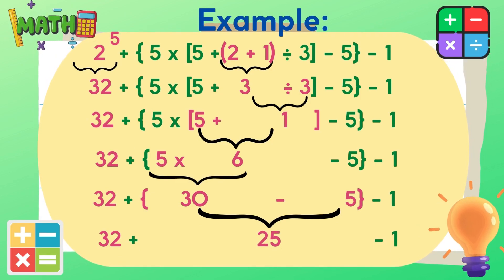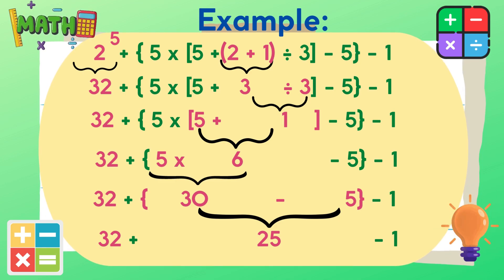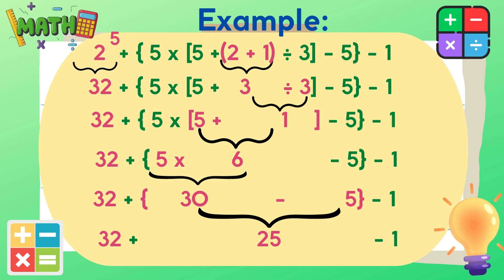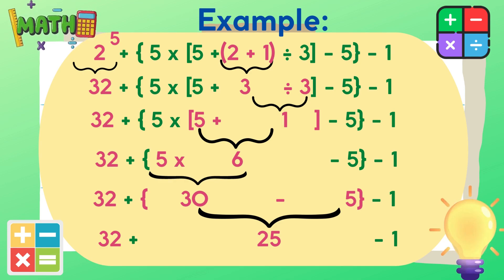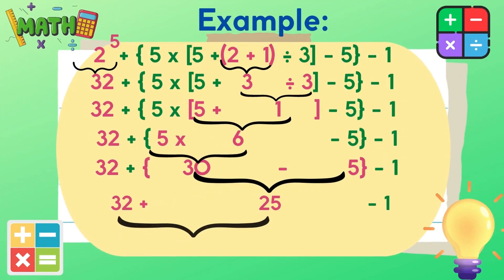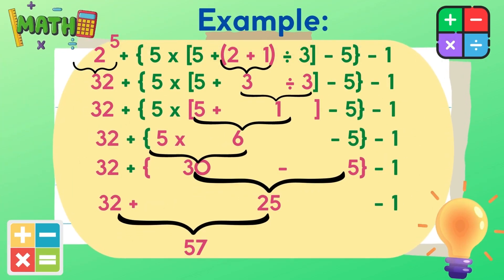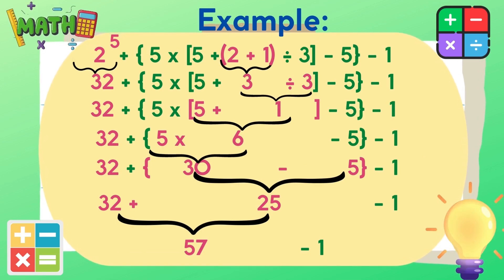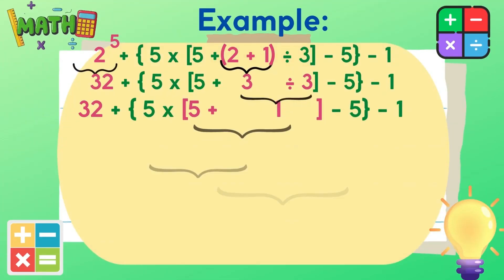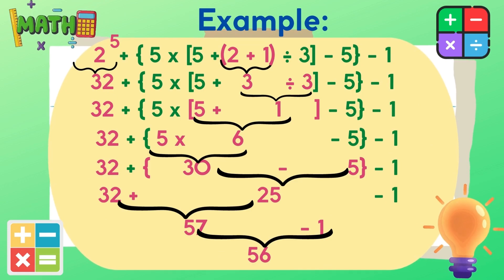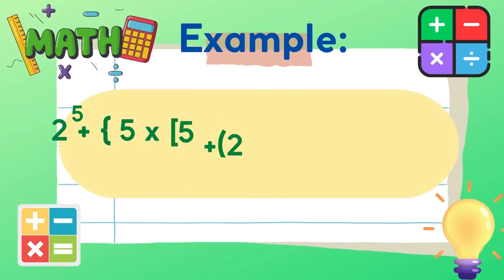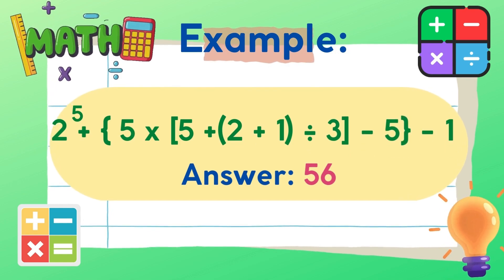Finally, we are all done with the exponent, grouping symbols, multiplication, and division. We are now down to addition and subtraction. So we need to add first: 32 plus 25 is equal to 57. Then the last operation is subtraction: 57 minus 1 is equal to 56. The answer is 56.